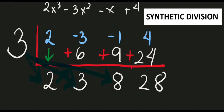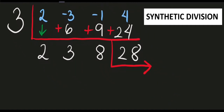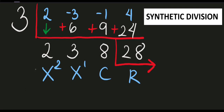Since 28 is our last value, our next step is to isolate it. For synthetic division, if the last number is not equal to zero, that value serves as our remainder. We then assign names to the remaining values: the last number before the remainder is the constant, then first degree (x), then second degree (x²), and so on.